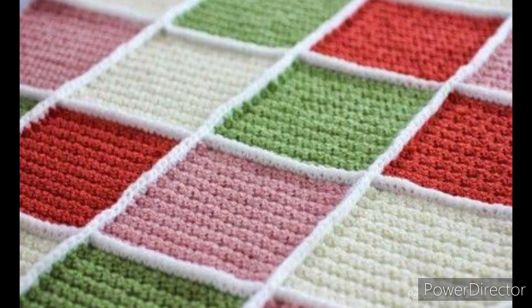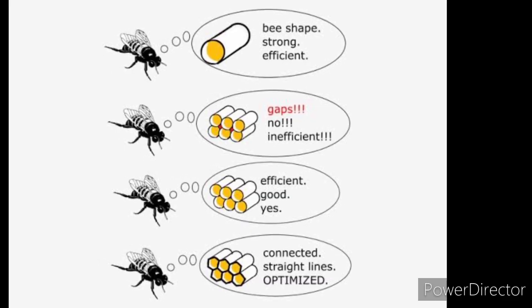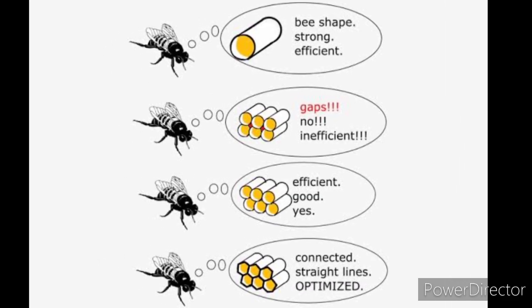Hexagon? Yes, it works. The least amount of wax and the most amount of honey can be stored.